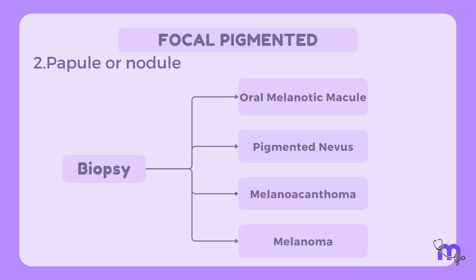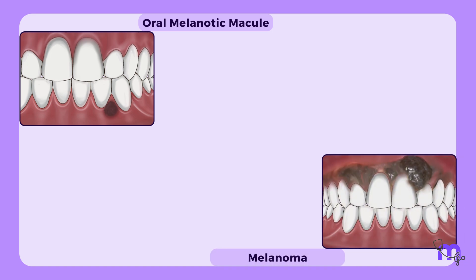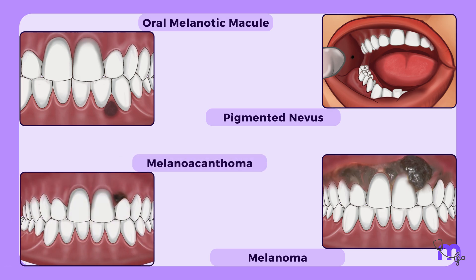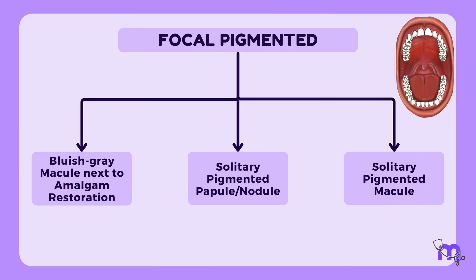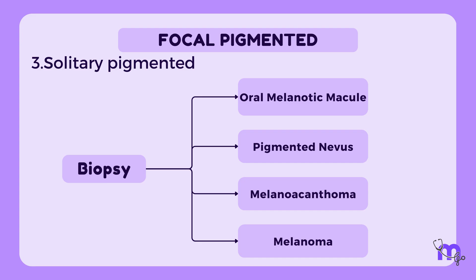The four possible diagnoses following biopsy are: oral melanotic macule, melanoma, pigmented nevus, and melanoacanthoma. If the answer to the third question is yes — meaning it's a solitary pigmented macule — the same protocol as the second question applies: a biopsy is typically recommended and the four possible confirmed diagnoses remain the same.